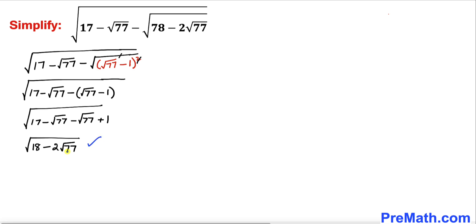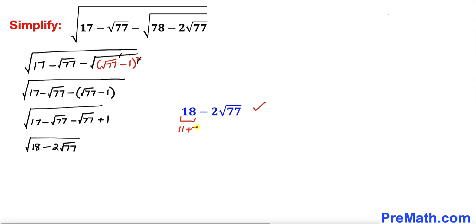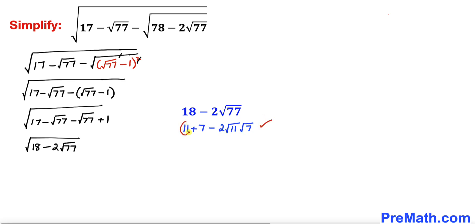Now let's focus on the new radicand: 18 minus 2 times square root of 77. We can write 18 as 11 plus 7, and likewise write square root of 77 as square root of 11 times square root of 7.